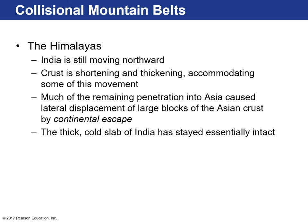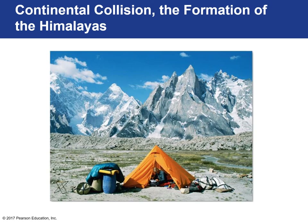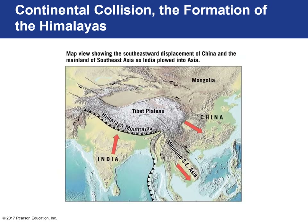The continental lithosphere is shortening and thickening as compressional forces continue to push the two plates against one another. India's penetration into Asia has caused a lot of lateral displacement in Southeast Asia and China, where they experience really strong earthquakes. Many transform faults have formed as a result of that lateral displacement — we call that continental escape. Here's India moving northward and slamming into Asia so strongly that it forces a lot of the continental crust in the region to move out of the way. In mainland Southeast Asia, transform faults have formed, causing devastating earthquakes yearly.